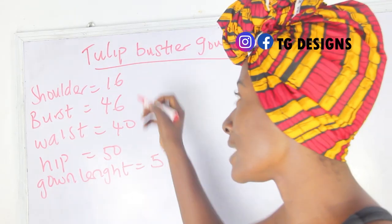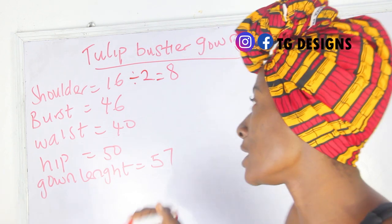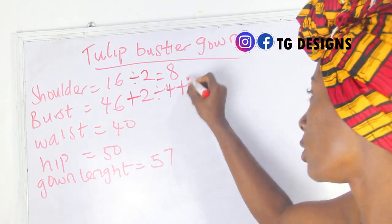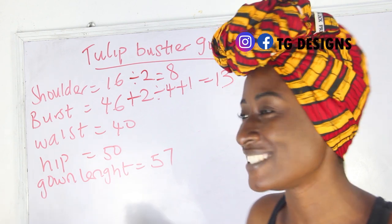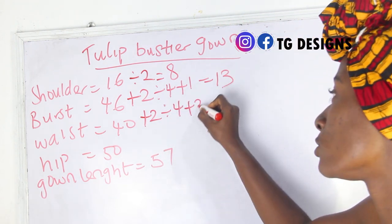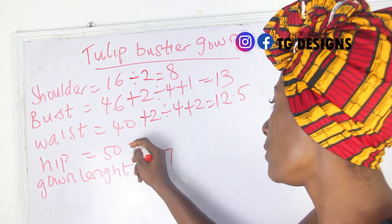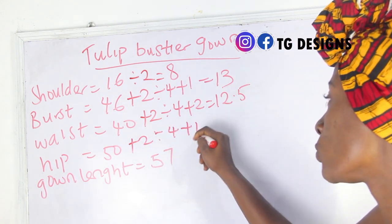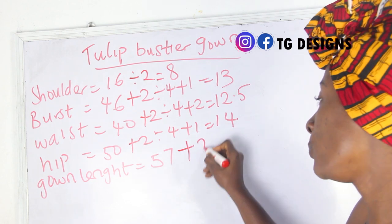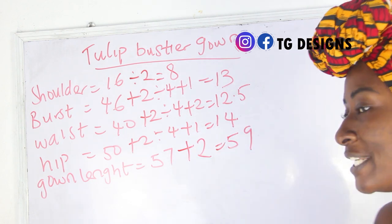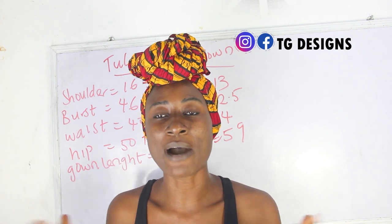Let's go ahead and calculate our measurements. Our shoulder is 16 — 16 divided by 2 gives us 8 inches. Our bust is 46 — 46 plus 2 divided by 4 plus 1 gives us 13 inches. Our waist is 40 — 40 plus 2 divided by 4 plus 2 gives us 12.5 inches. Our hip is 50 — 50 plus 2 divided by 4 plus 1 gives us 14 inches. Our gown length is 57 plus 2, giving us 59 inches. These are the basic measurements required to achieve your tulip gown.